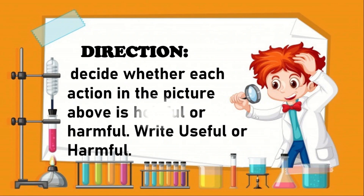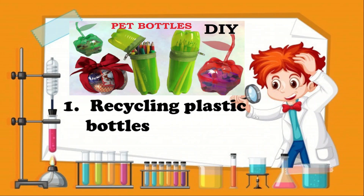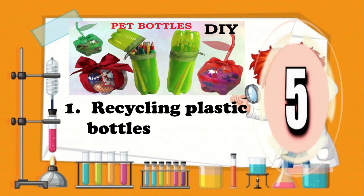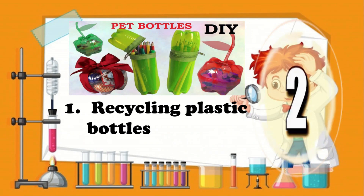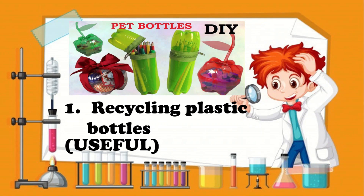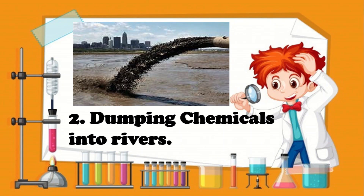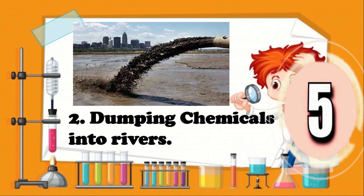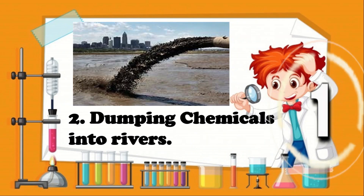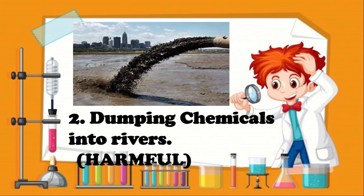Let us have a simple activity. Decide whether each action in the picture is helpful or harmful. Write useful or harmful. I will give you 5 seconds to answer. For number 1: Recycling plastic bottles. The correct answer: Useful. Very good! For number 2: Dumping chemicals into rivers. The correct answer: Harmful. Very good!